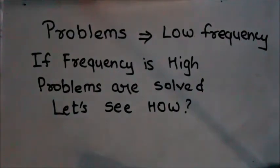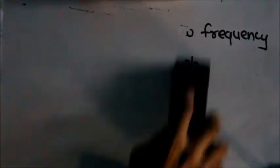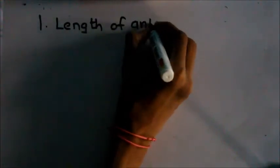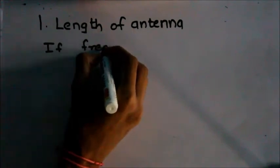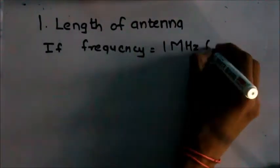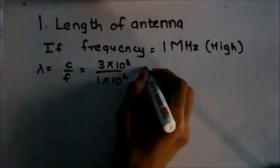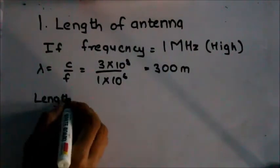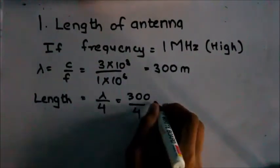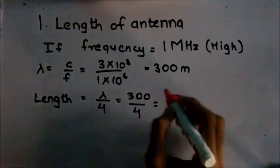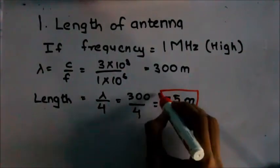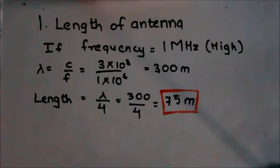For the problem of length of antenna, if a high frequency like 1 MHz is used, then its wavelength would be nearly 300 meters, and hence the length of antenna would be around 75 meters, which is possible as we can have an antenna of length 75 meters.